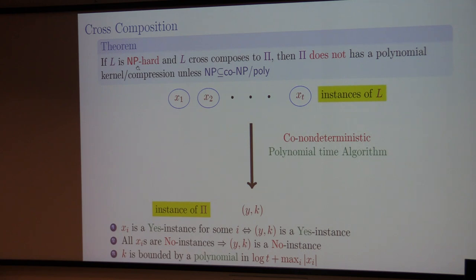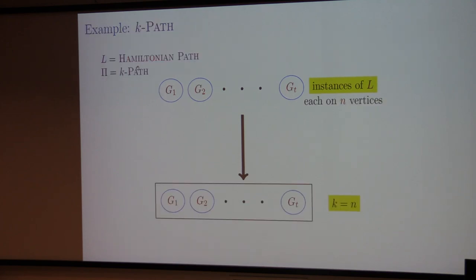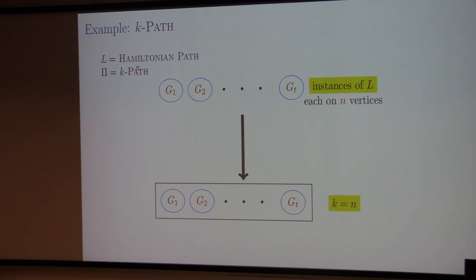This is the normal definition of kernel lower bounds — and we can use this relaxed co-nondeterministic version as well. One of the simplest examples for proving a kernel lower bound is k-path. For cross-composition on k-path, you start with the Hamiltonian path problem — whether the graph has a path on n vertices. You can always assume all instances have the same number of vertices and edges.